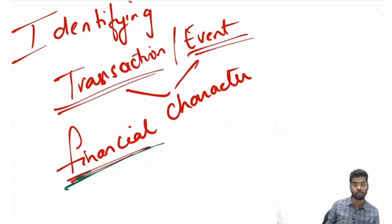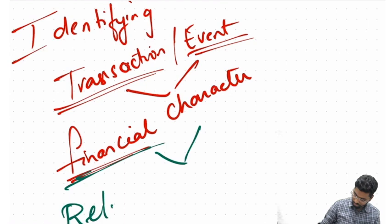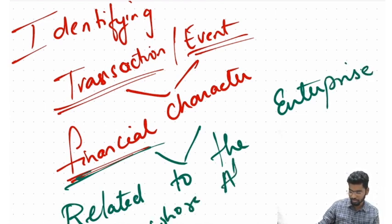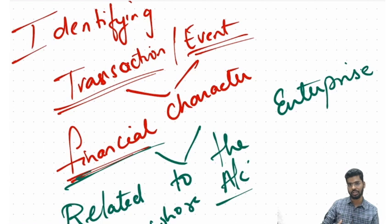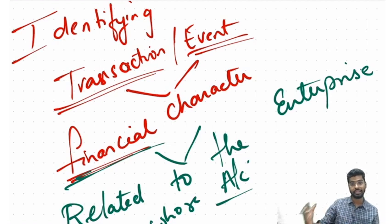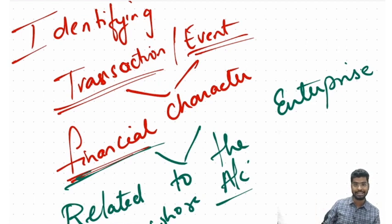I told you a transaction can be both monetary and non-monetary, but in accounting I shall only look into transactions which are purely financial in nature. The third condition is that it should be related to the enterprise whose accounting I am doing. When I say accounting of Arjun, it should consist of all transactions of a financial nature concerned with me, not transactions of others unrelated to me.